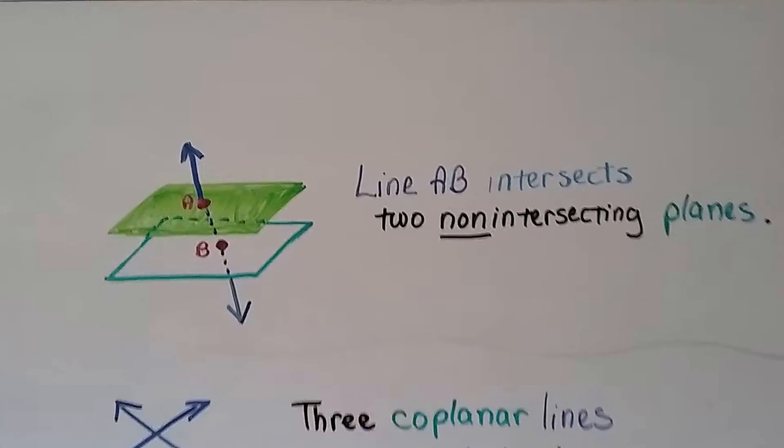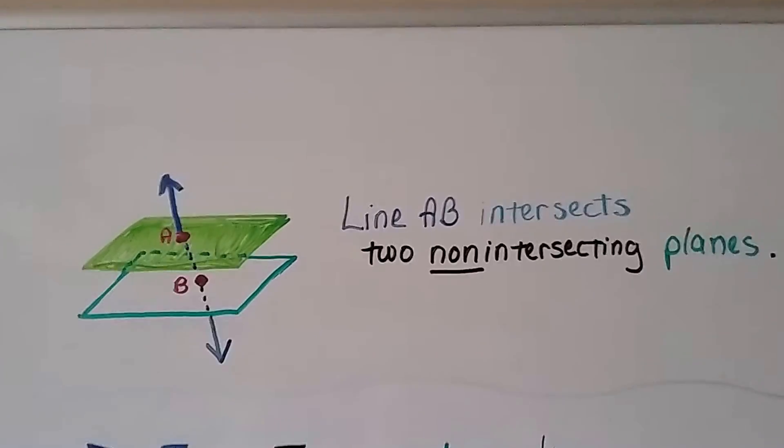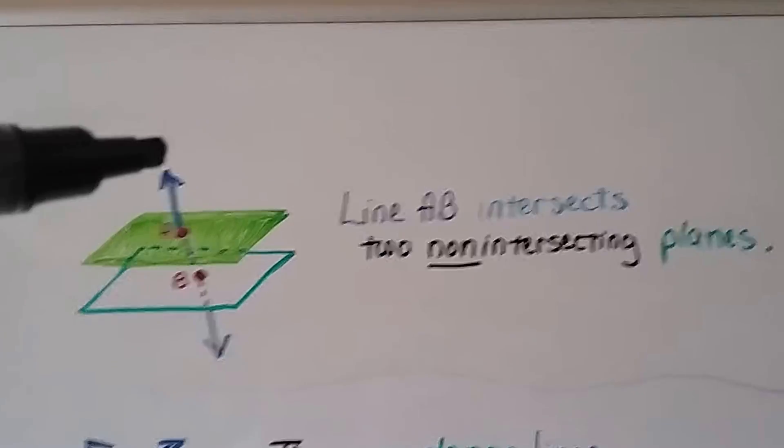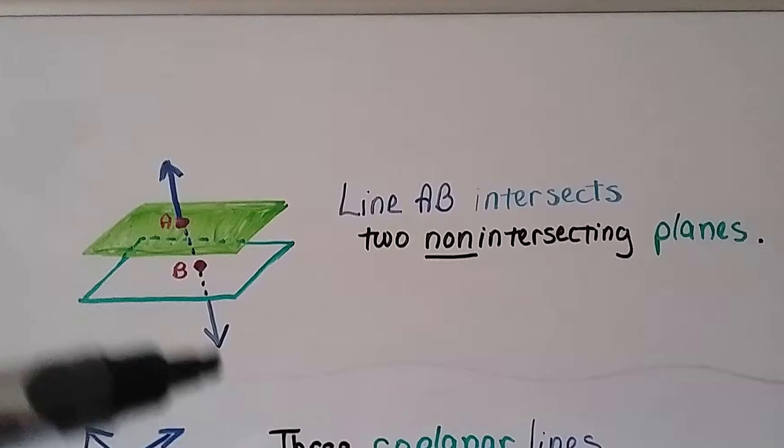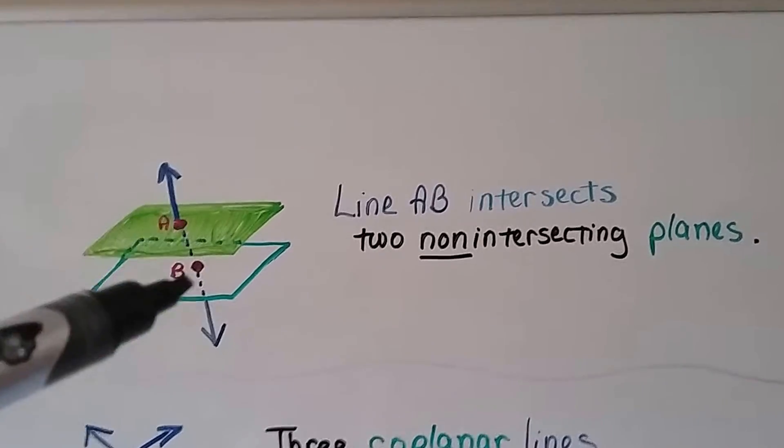Here we have line AB intersects two non-intersecting planes. So these two planes are not touching each other, but line AB is going through them and intersecting them at points A and B.